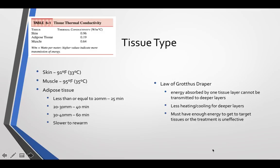Another law that comes into effect with tissue type is the Grotthuss-Draper Law, which basically says that you need enough energy to reach your target tissue in order to have physiological effects. Any energy absorbed at the superficial layers is not available to be transmitted to deeper layers, so we automatically get less heating and cooling the deeper we go. If we need to target something deeper, we have to make sure we have enough energy to get to those target tissues or the treatment will be ineffective.